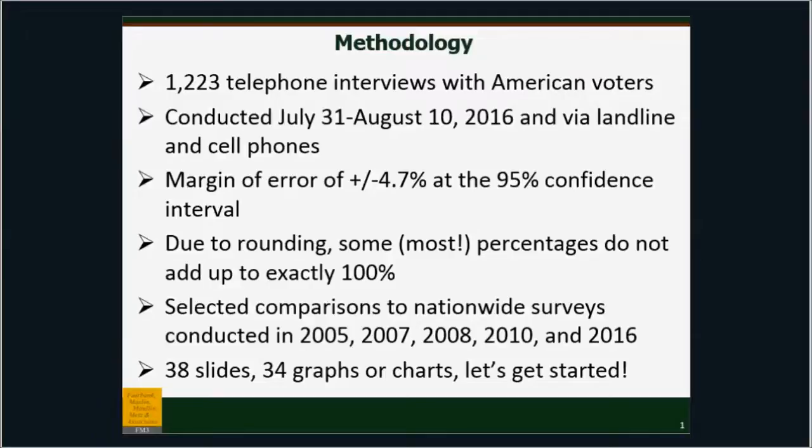The margin of error is pretty high, and that is because this is a big country with a lot of different opinions, so driving that margin of error down lower is really difficult. When it comes to things like forest pests, a margin of error of 4.7 feels a little high to me. However, you have to realize that a 4% difference in opinion isn't something that we would ever base a policy on. So that's something to keep in mind.